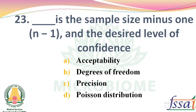Dash is the sample size minus 1 and the desired value of contents. Options: Acceptability, Degrees of Freedom, Precision, Poisson Distribution. The right answer: Option B, Degrees of Freedom.